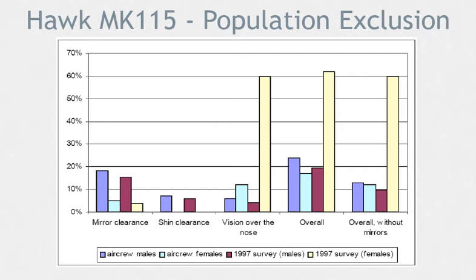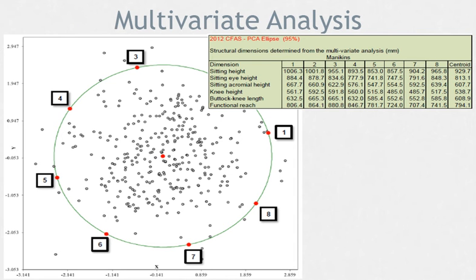The overall aircrew male and female exclusion rates are around 20% with the mirrors and about 10% with the mirrors removed. Basically, the people excluded by vision over the nose are not necessarily the same people excluded by shin clearance. This means that accommodating the 3rd to 97th percentile does not mean you're only excluding 6% of the population. The field of anthropometrics has evolved such that multivariate analysis can be used to describe boundary cases, which, if accommodated, will ensure accommodation for the population within the boundary.